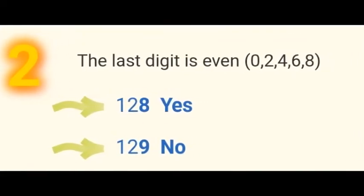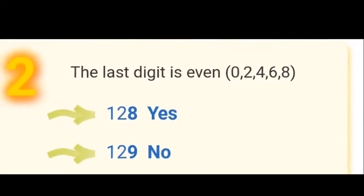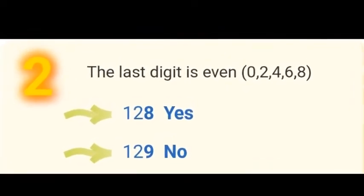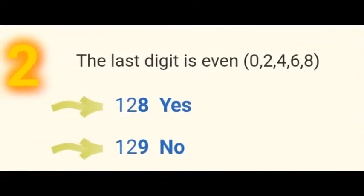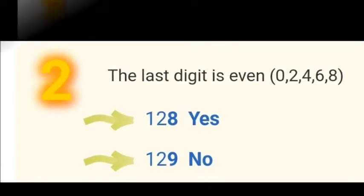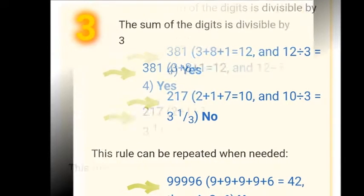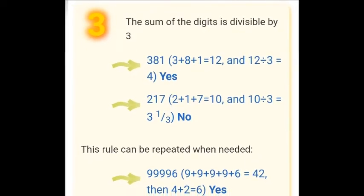Now let's discuss divisibility by 2. A number is divisible by 2 if it is even; odd numbers are not divisible by 2. If we have a big number, for example 128 or 129, the number which ends with an even digit is divisible by 2. A number which does not end with an even digit is not divisible by 2.